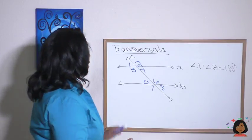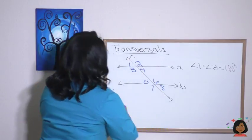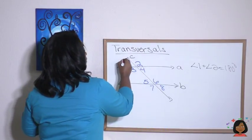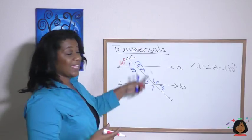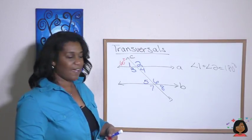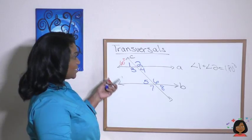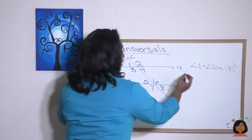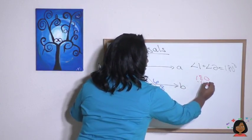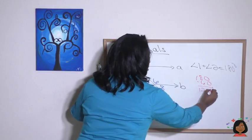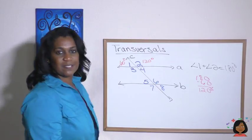How does this actually help us? If I told you that angle 1 was 60 degrees, knowing that angle 1 and angle 2 are supplementary, I can find angle 2. All I have to do is subtract 60 from 180. So 180 minus 60 is 120, which means angle 2 is 120 degrees.